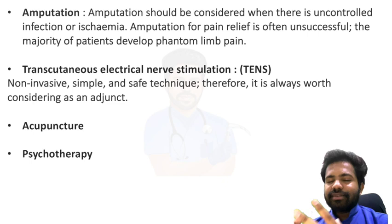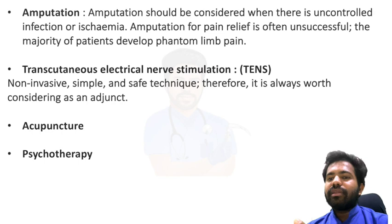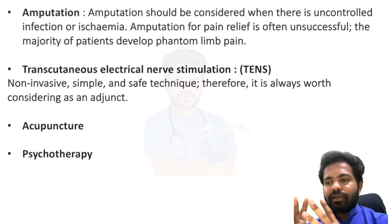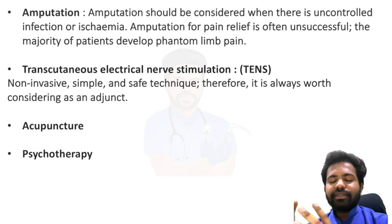Surgical intervention like amputation should be considered only when there is uncontrolled infection or ischemia. Amputation for pain relief is often unsuccessful because the majority of patients develop phantom limb pain after amputation. Transcutaneous electrical nerve stimulation (TENS) is a simple, non-invasive, and safe technique worth considering as an adjunct to medical treatment. Acupuncture and psychotherapy also play a role in CRPS treatment.